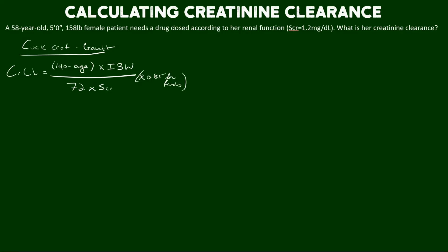140 minus age times ideal body weight over 72 times serum creatinine and if they're female we have to multiply that by a factor of 0.85 to adjust it.